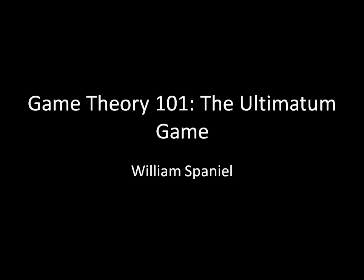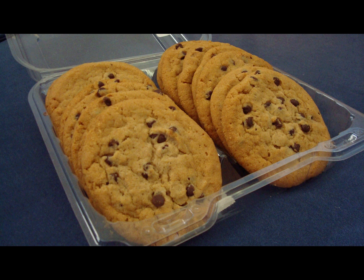Today we're going to go over the ultimatum game, and we're going to frame it like this. Two kids, we'll call them Angelica and Tommy, are trying to split a dozen cookies. Tommy's parents made the following rules: Angelica will make an ultimatum, or a take-it-or-leave-it offer to Tommy. If Tommy accepts, then he gets that number of cookies and Angelica gets the rest. If Tommy rejects it, however, then both get nothing.